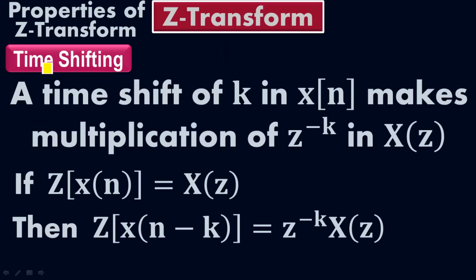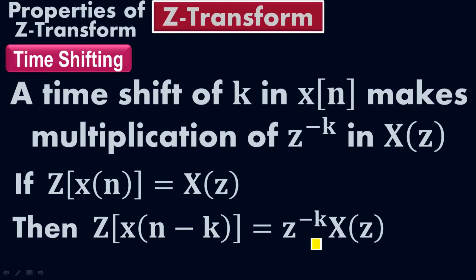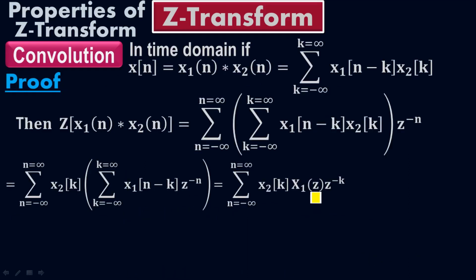According to the time-shifting property, we do a time shift of K in X(N), which produces a multiplication of Z to the negative K in the Z-transform. The Z-transform of X(N minus K) equals Z to the negative K times X(Z). Applying the exact same logic, we have the product of X1(Z) times Z to the negative K.